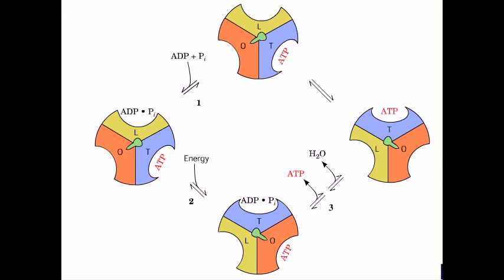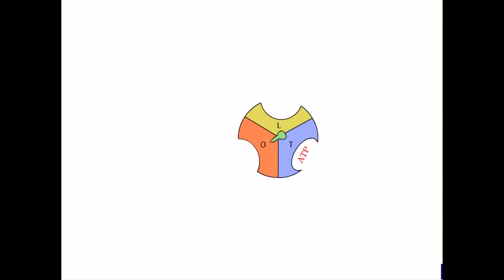Okay friends, now let us talk about the binding change mechanism for ATP synthesis with the enzyme ATP synthase. F1 has three chemically identical but conformationally distinct alpha-beta promoters. Each promoter has one catalytic site for ATP synthesis.